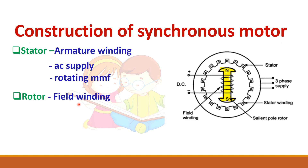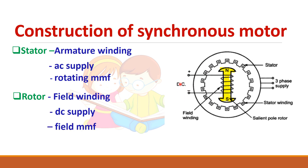If you see the rotor, it is shown here as a salient pole rotor. The rotor carries the field winding and we have to give a DC supply to the field winding. This is called DC excitation. This DC excitation will produce a field magnetic field.